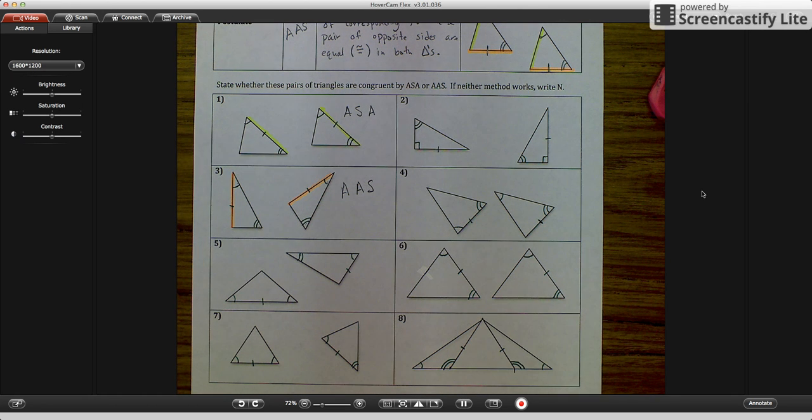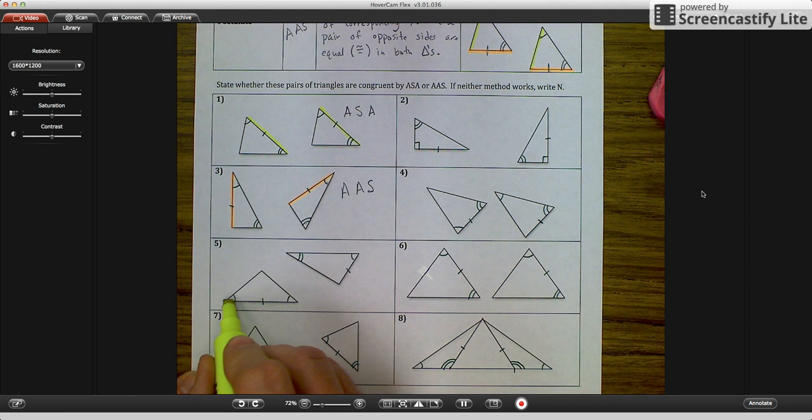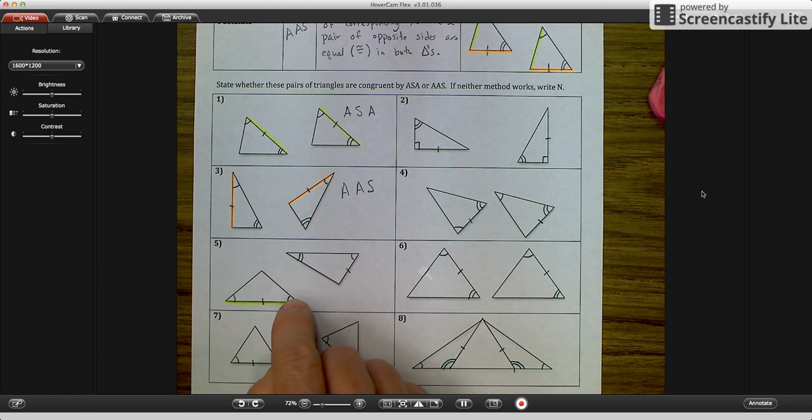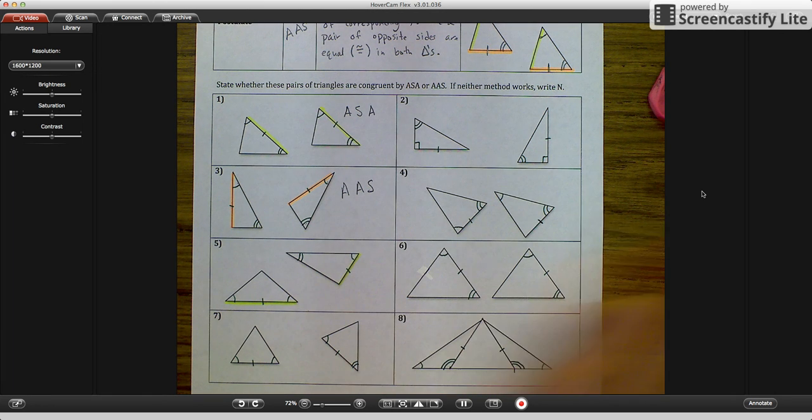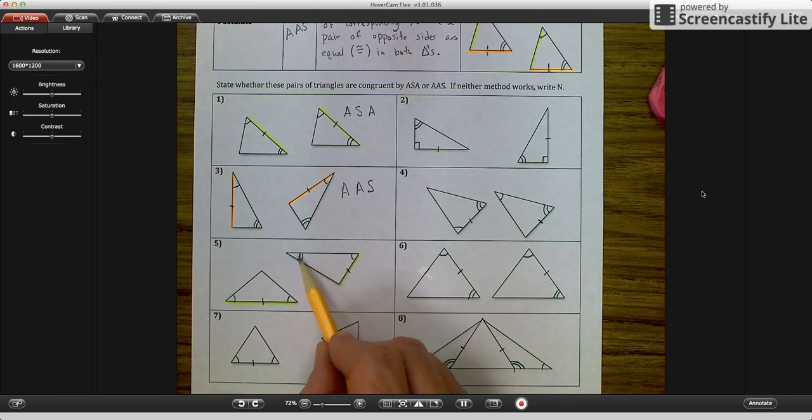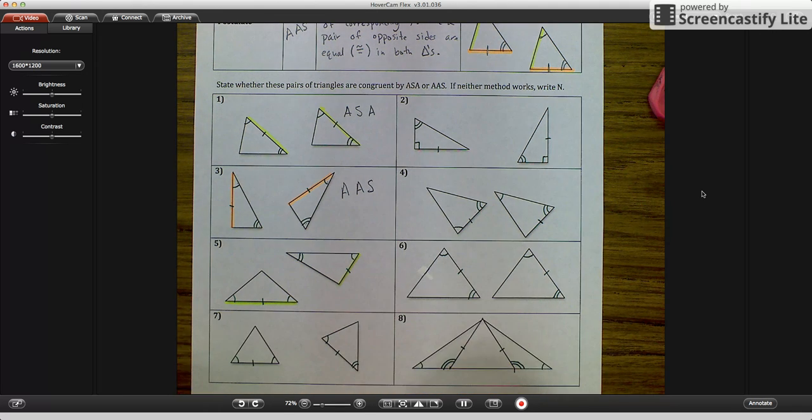For number five, let's look. We have, let's see where our side is located. On the first shape, it is included. Angle, side, angle, and these are actually congruent angles on the bottom. And on this one, our side is over here. It is not included. This one would be angle, angle, side. So since they are not the same, and they don't have the corresponding or same, I'm going to write an N there because they are not congruent.